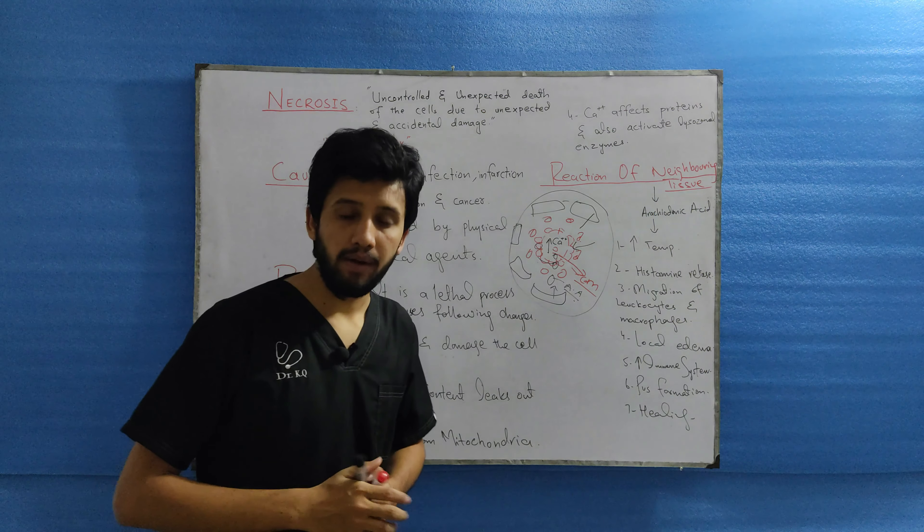Because the cell is killed by extracellular or intracellular events. In apoptosis, the cell does not cause damage to neighboring cells and there is no inflammation in the neighboring cells. But here in necrosis, it also causes neighboring cells to be damaged and there will be inflammation in the neighboring cells.